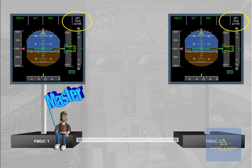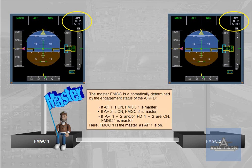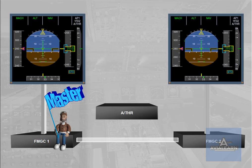FMGC 1 is the master as Autopilot 1 is on. The Autothrust is driven by the master FMGC. Note: when Flight Director 1 plus 2 are on, each FMGC drives its Flight Director and FMA on its on-side PFD.